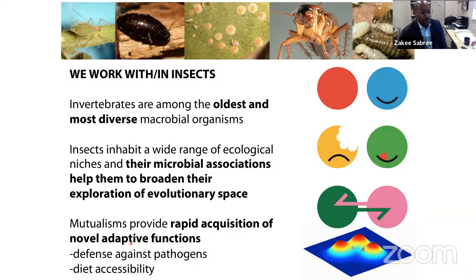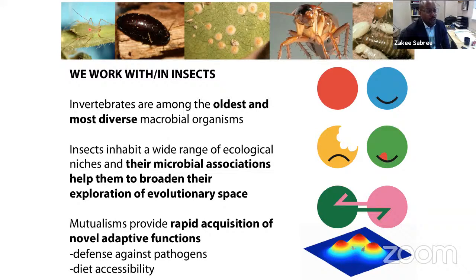Some mutualisms between microbes and insects that many of you are familiar with include those between termites and their gut bacteria, which enable termites to persist and thrive on hardwoods, softwoods, and damp woods. Another example is aphids, which maintain mutualisms with Buchnera, responsible for provisioning essential amino acids and vitamins to the host in exchange for carbohydrates. Aphids also maintain protective facultative symbionts that can defend against parasitic wasps and pathogens. Defense from pathogens and diet accessibility are pretty common themes across insect-microbial interactions.